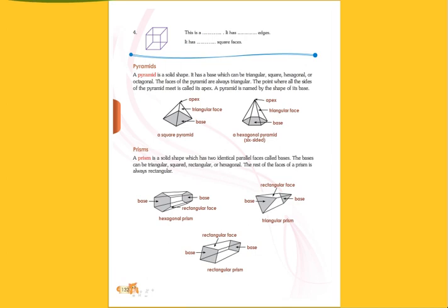It is also always a triangular. The point where all the sides of the pyramid meet is called its vertex. Pyramid ke sarei sides jis point pe meet hoote hai, that point is known as its apex. Usko hum apex kehte hai.